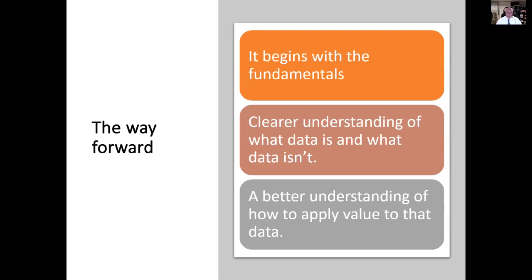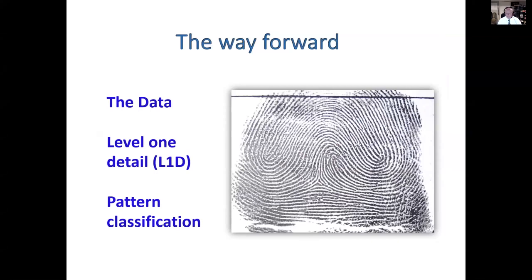The way forward begins with an understanding — a consensus — of what constitutes the fundamentals of friction ridge analysis. We need a clearer understanding of what data is and what data isn't, and a better understanding of how to apply value to that data. So here we have the data — level one detail: pattern classification. This was actually a beautiful print, by the way. If you saw this as a flat impression, you'd swear you were just dealing with a small right slant loop, but as a rolled impression, this is a classic composite pattern — I've never seen anything this big in my life.